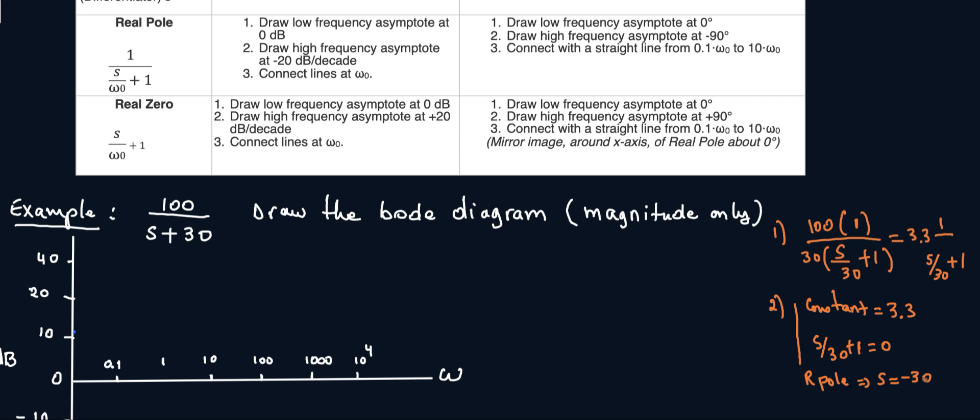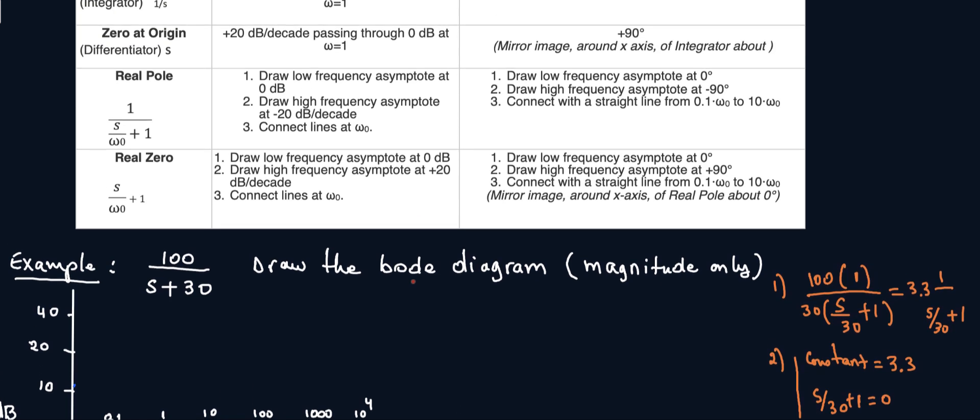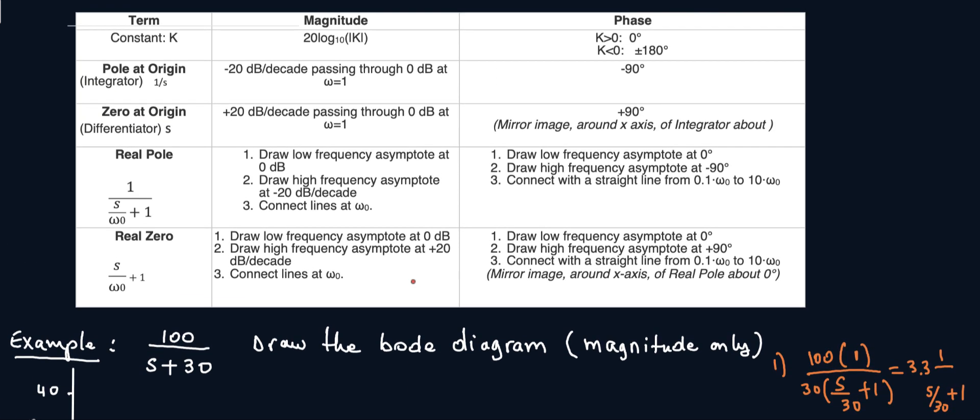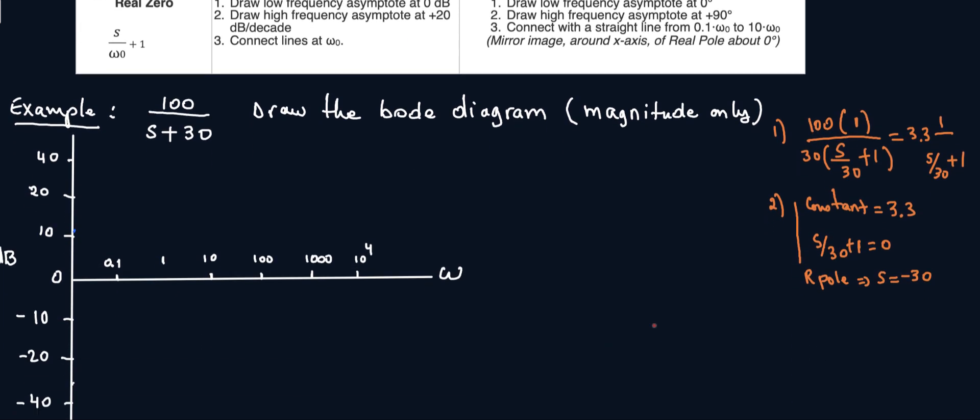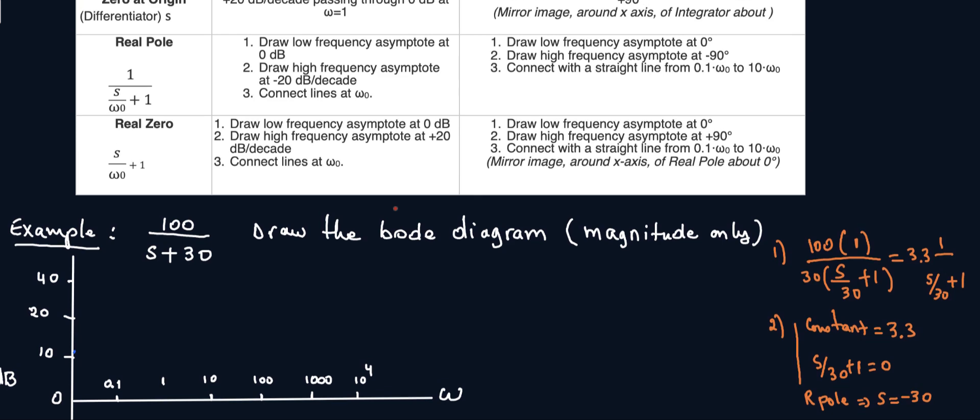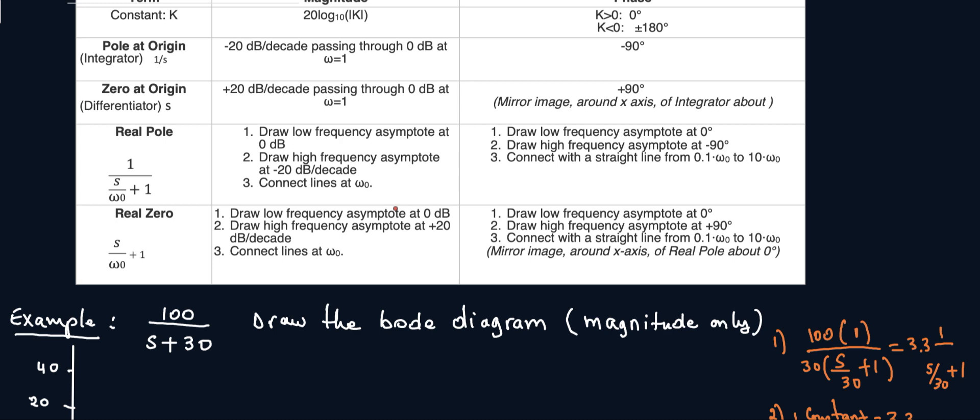For a constant, the note here says whenever you have a constant the magnitude would be 20 log of the constant. So for a constant, magnitude would be 20 log of whatever the constant is. 20 log of my constant is 3.3. So plug that in the calculator and I have about 10.37, so about 10.4 dB. So I'm going to draw that. This is a magnitude plot. You could have a phase or magnitude plot. Pay attention to the question, but here we are only going to do magnitude.